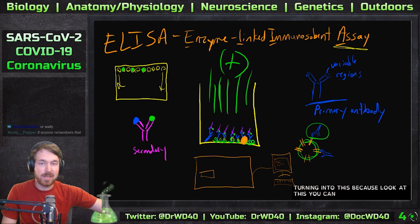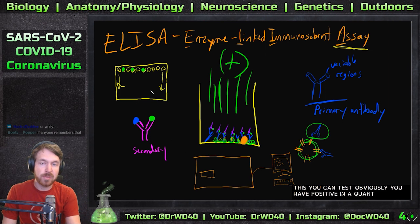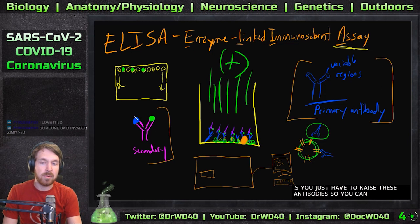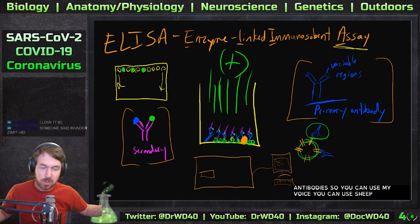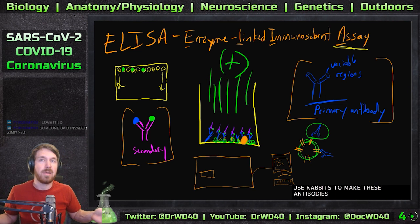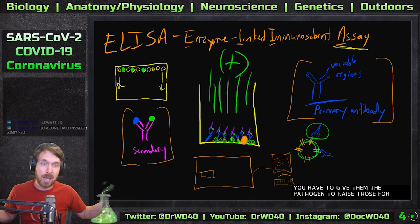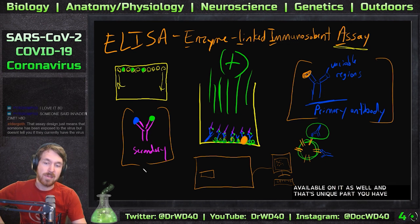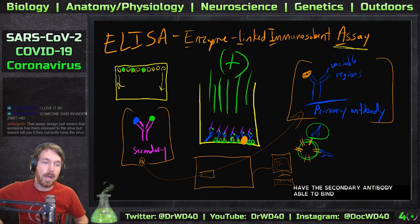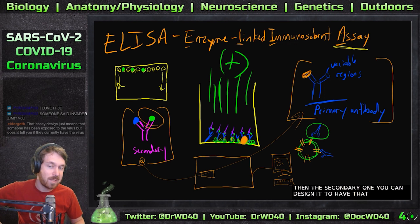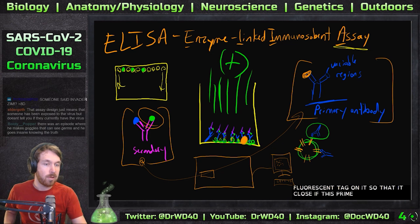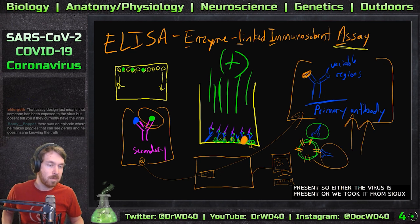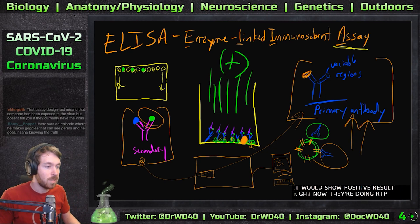I can see future tests turning into this format. You'd have positive and negative controls on the plate and you could do massive testing. The key is you have to raise these antibodies — you can use mice, sheep, or rabbits to produce them, though you unfortunately have to give them the pathogen. You also need the secondary antibody with the fluorescent tag. If the primary antibody or virus is present, it shows a positive result. Right now, they're doing RT-PCR to test for this.